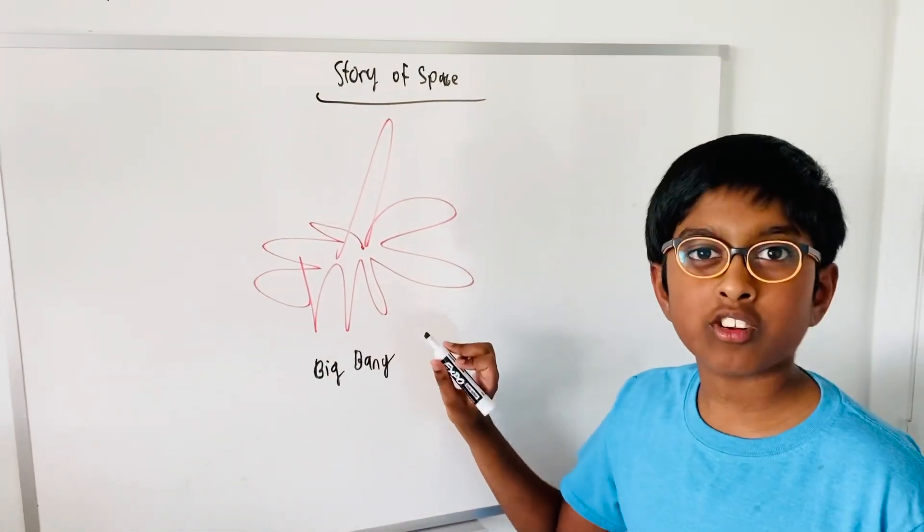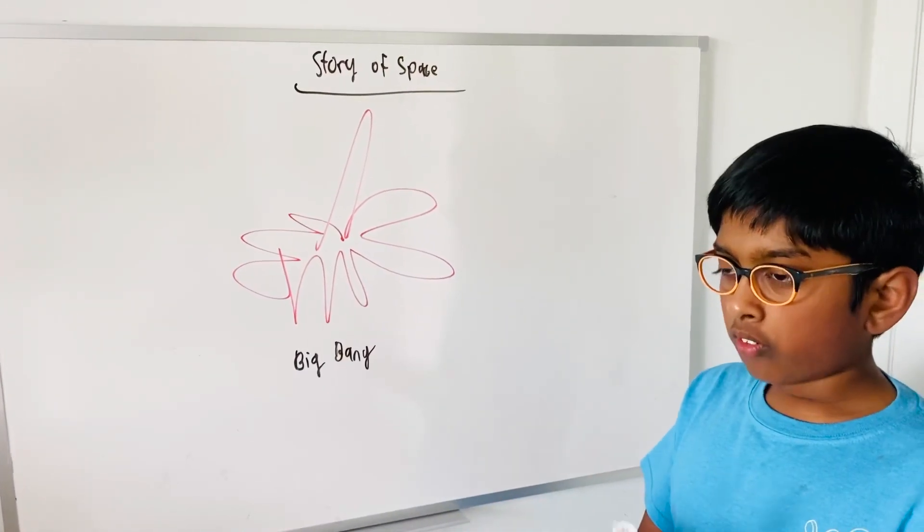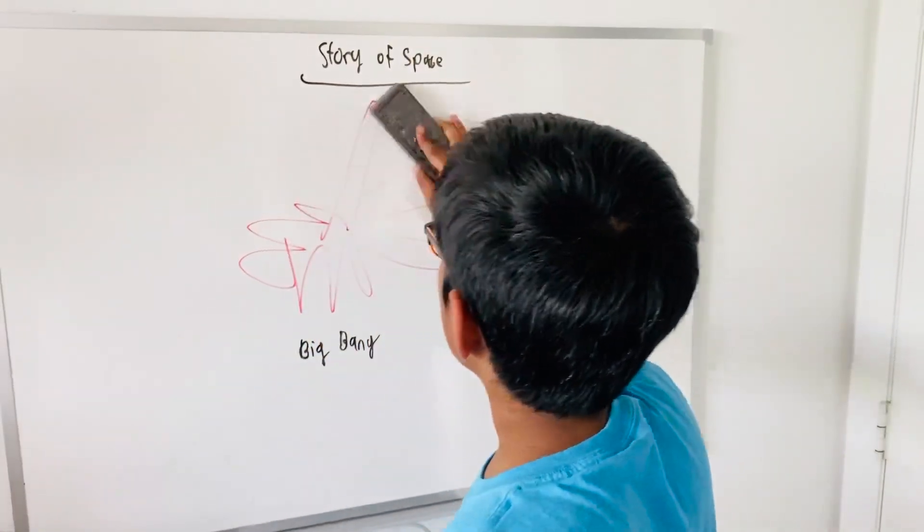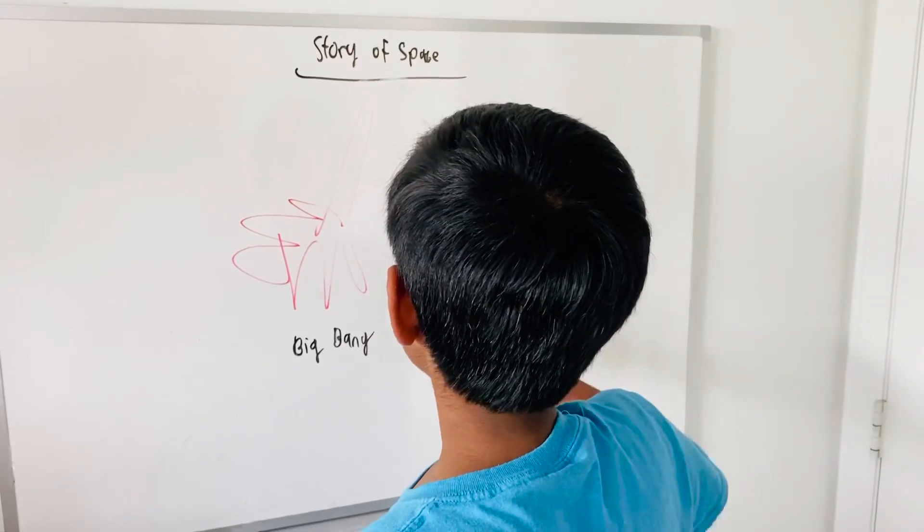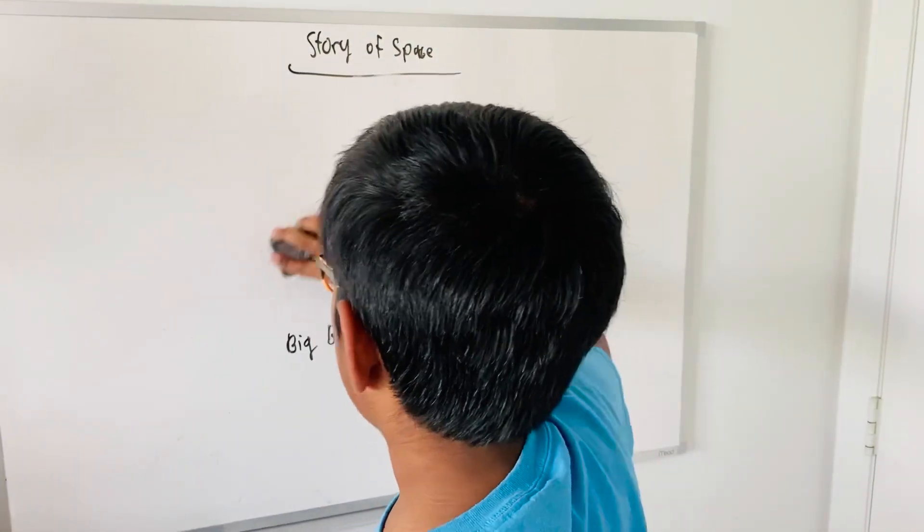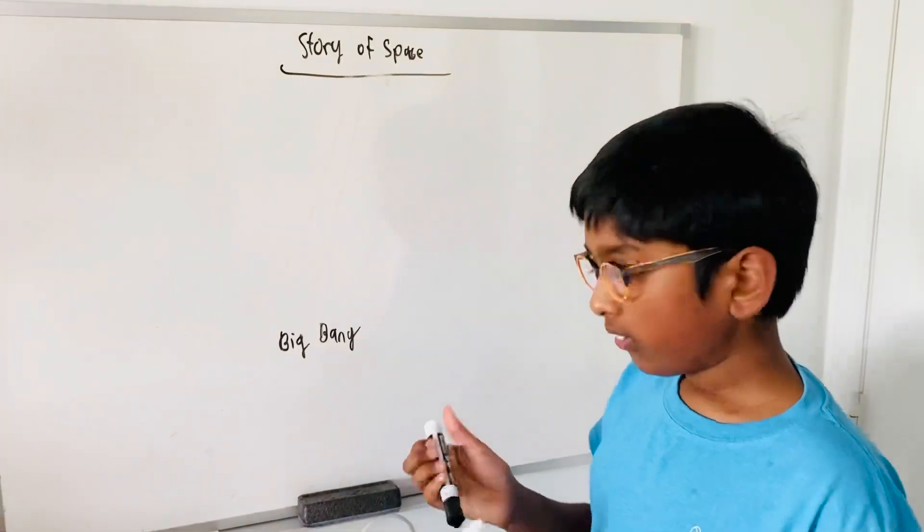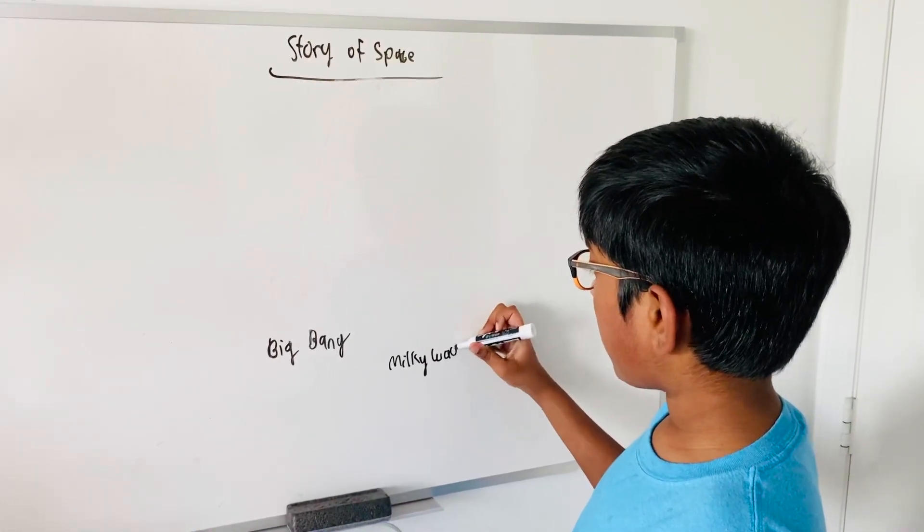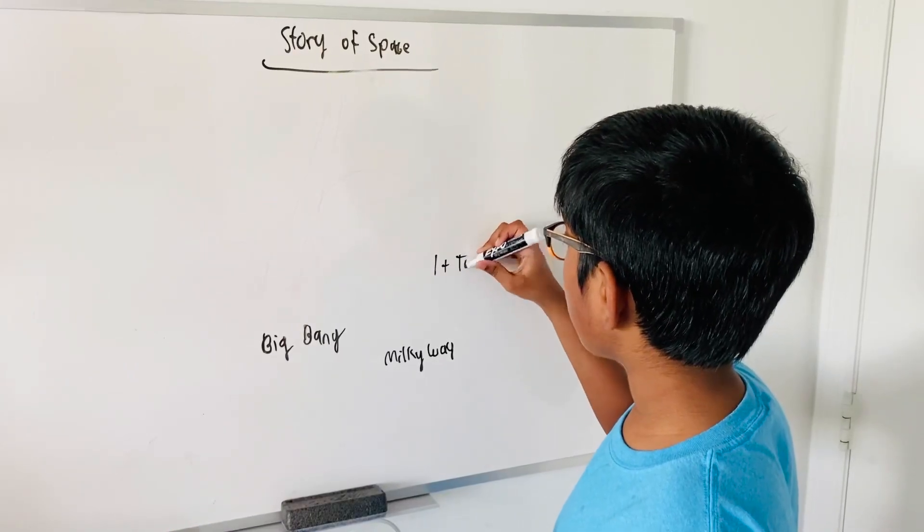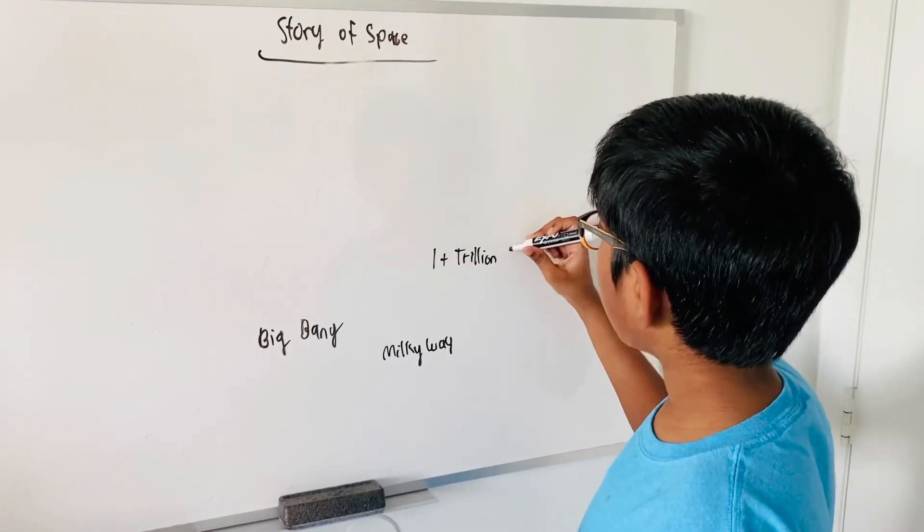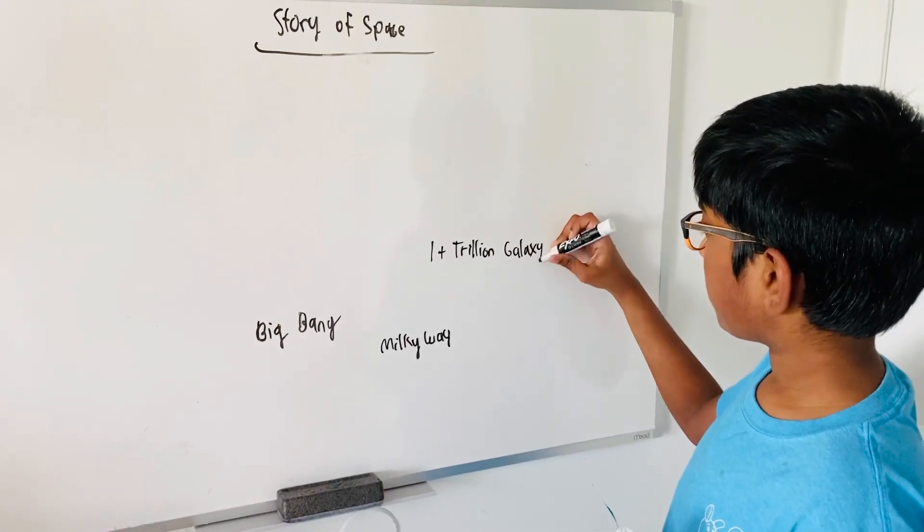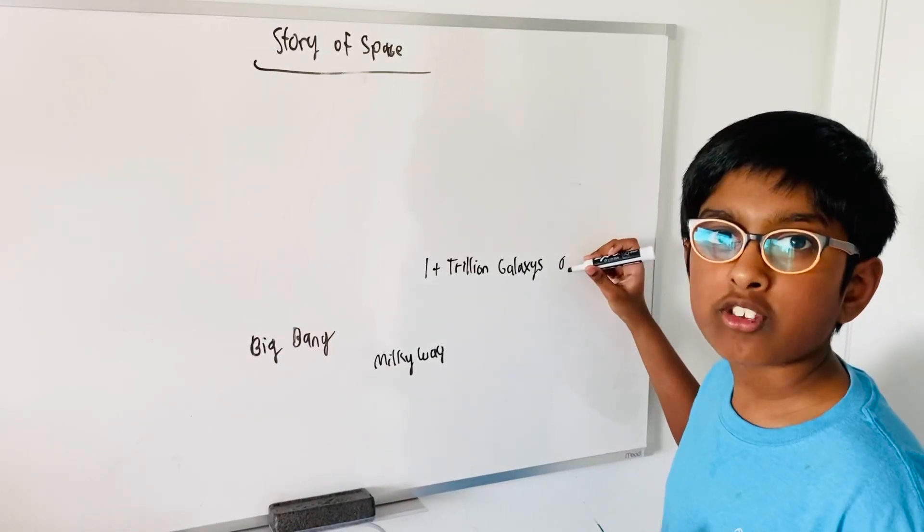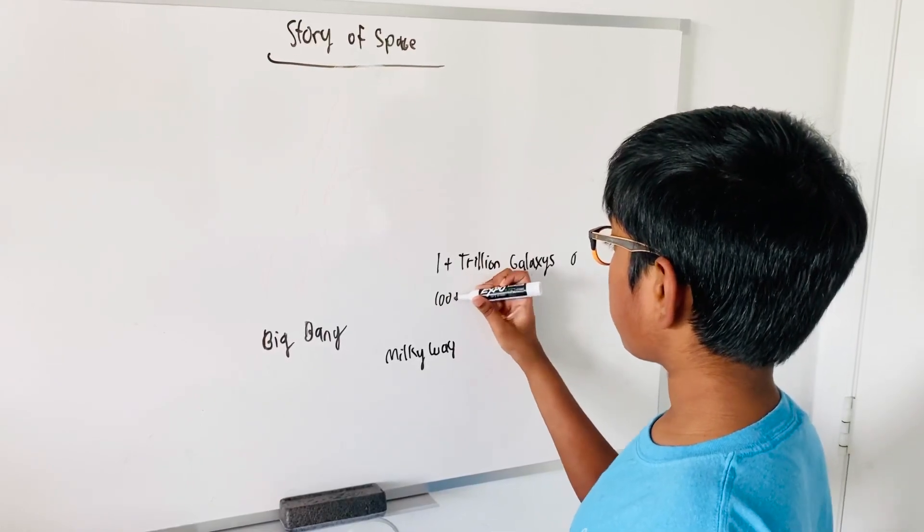So the Big Bang is this explosion. Millions of years after its closing, the first galaxy started forming. So the galaxies are this big cluster of stars. And our Earth and Sun is in a galaxy called the Milky Way. And there are one plus trillion galaxies.